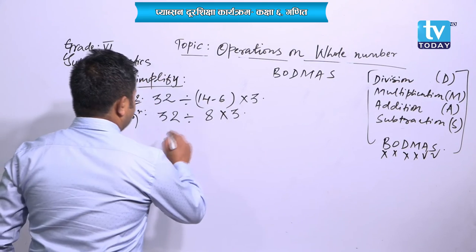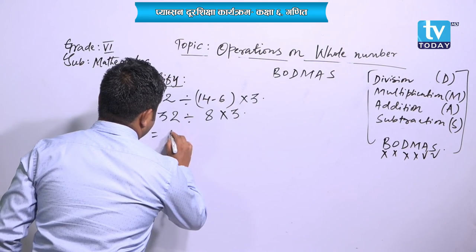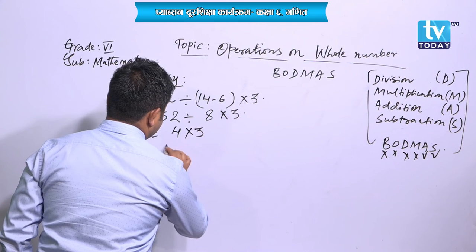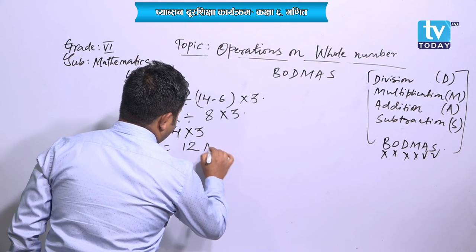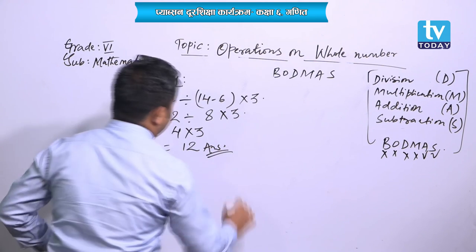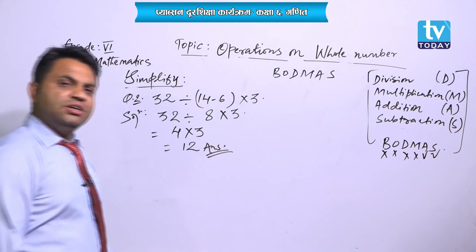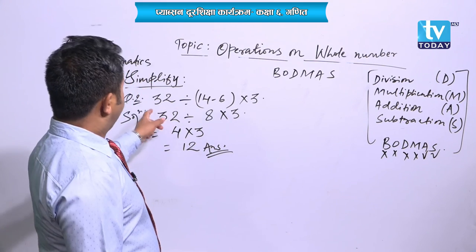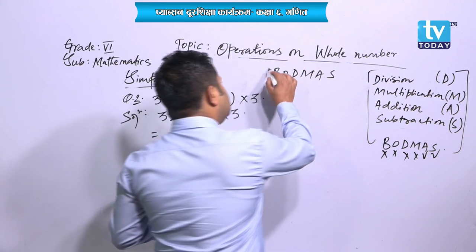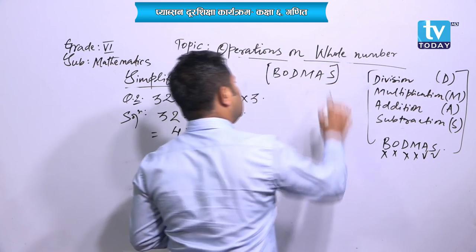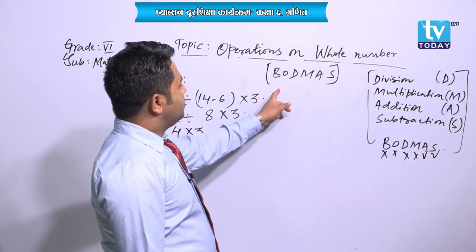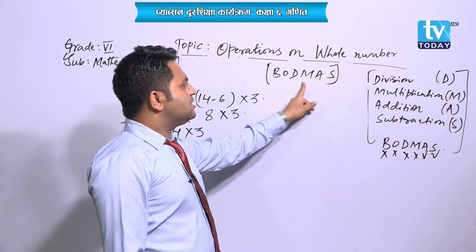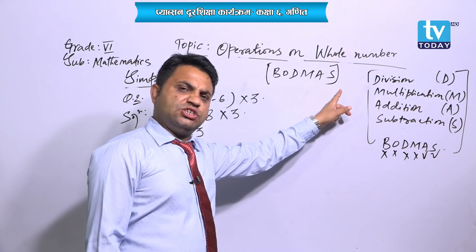First do the work of division, then the other operations. 32 divided by 4 is 8, and 8 into 3 equals 24. That is the answer. Simply use the BODMAS rule: bracket, of, division, multiplication, addition, and subtraction.